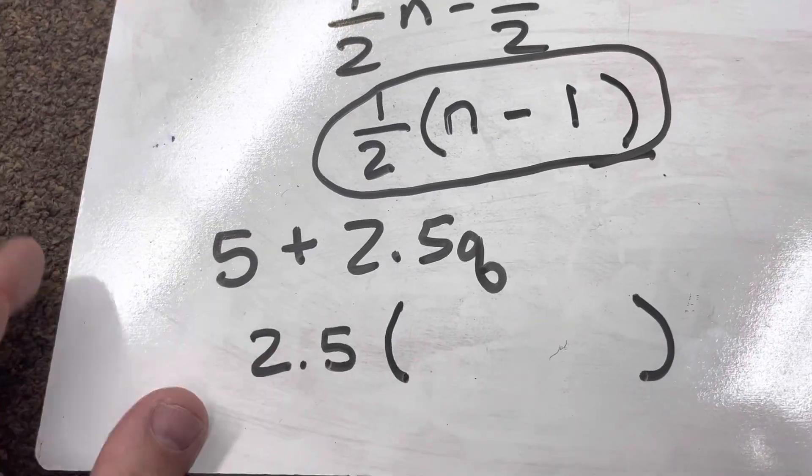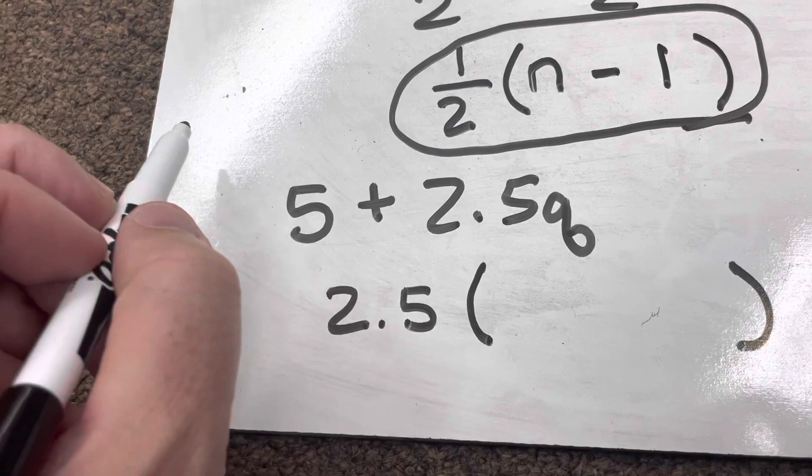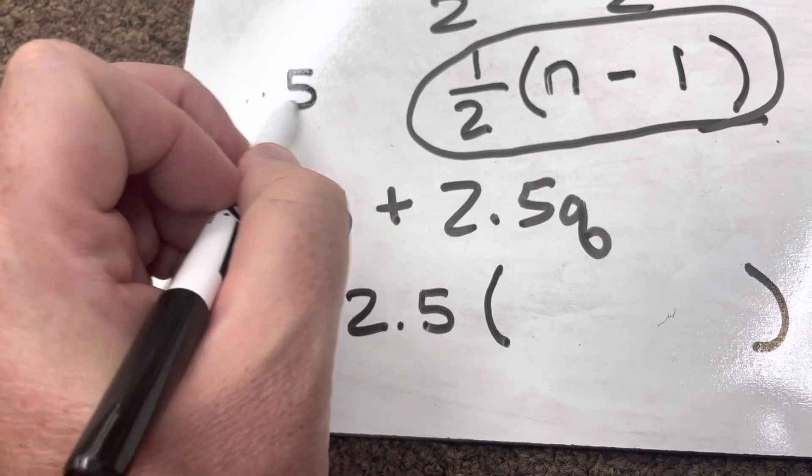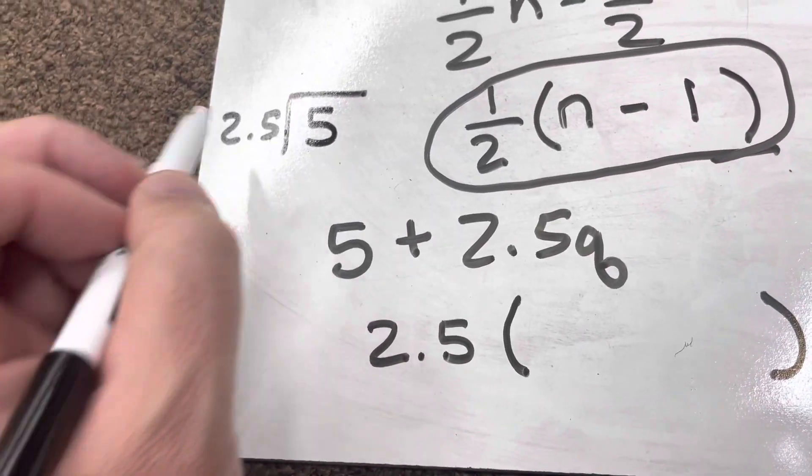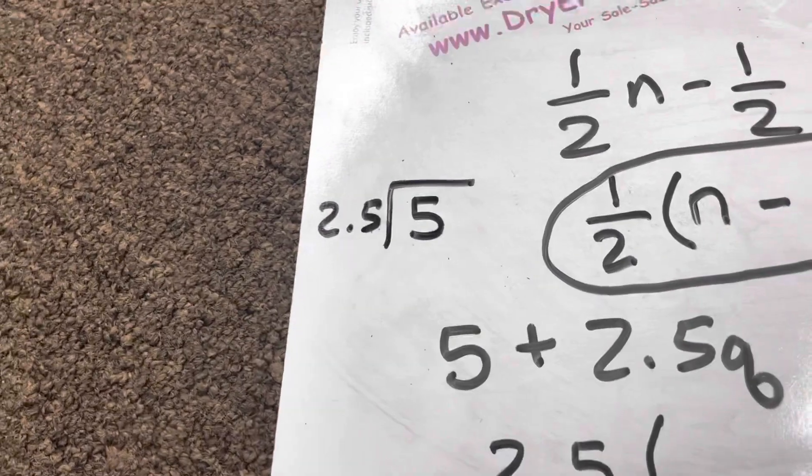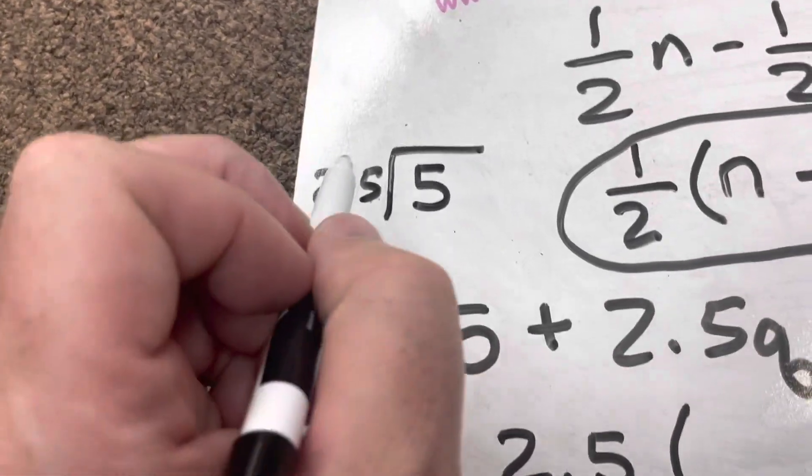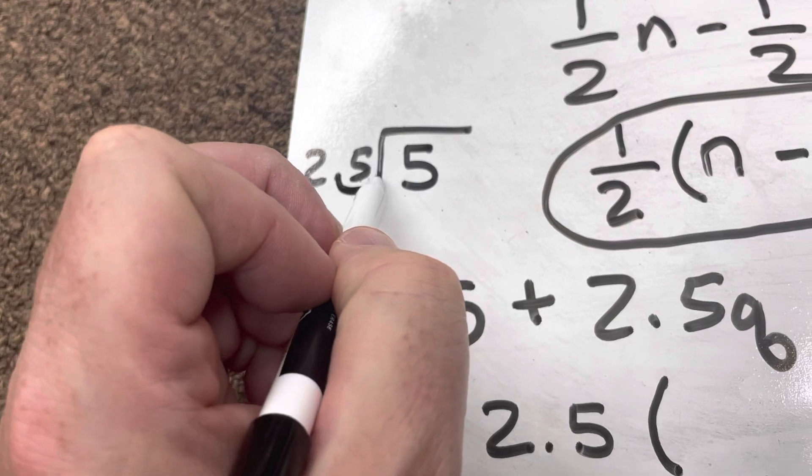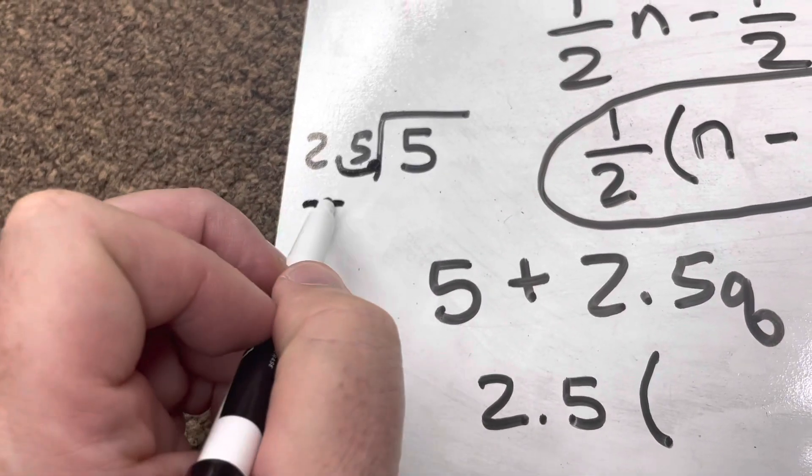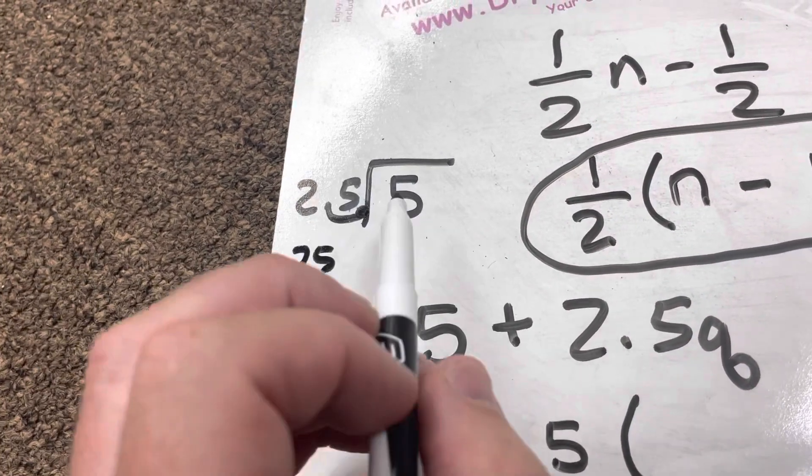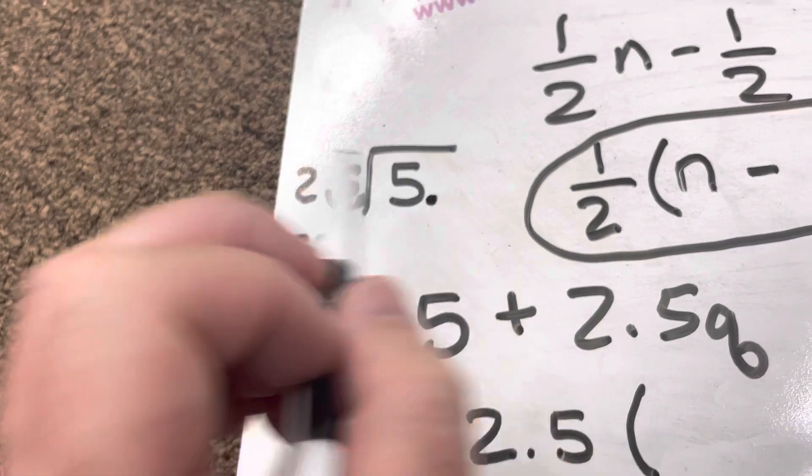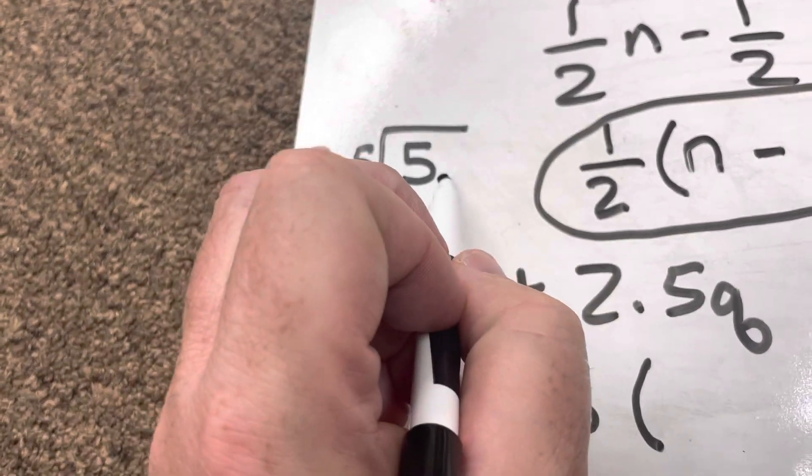I'm dividing everything by 2.5. So essentially, I'm taking 5 and I'm dividing that by 2.5. Well, I have to remember my rules of dividing decimals. I have to take this decimal and move it all the way to the right, making that number 25. There's no decimal in 5, so I know that I put it right there. I take it, I move it to the right, that becomes 50.